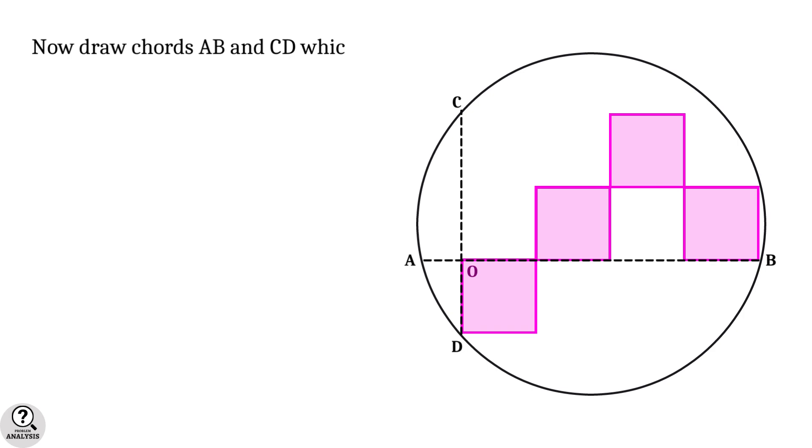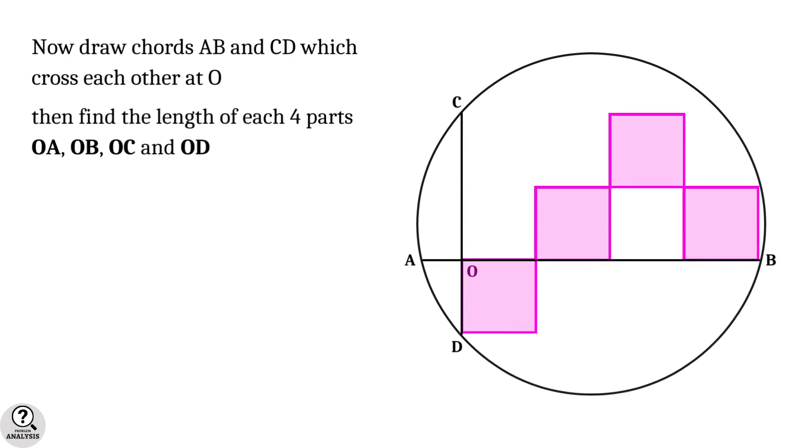Now draw the chords AB and CD which cross each other at the point O. Then we have four sections: OA, OB, OC, and OD.